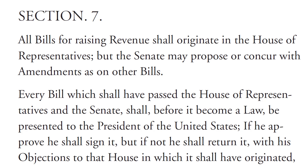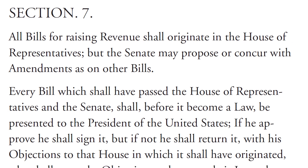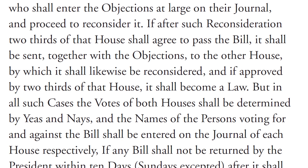Section 7. All bills for raising revenue shall originate in the House of Representatives, but the Senate may propose or concur with amendments as on other bills. Every bill which shall have passed the House of Representatives and the Senate shall, before it become a law, be presented to the President of the United States. If he approve, he shall sign it, but if not, he shall return it with his objections to that House in which it shall have originated, who shall enter the objections at large on their journal, and proceed to reconsider it.